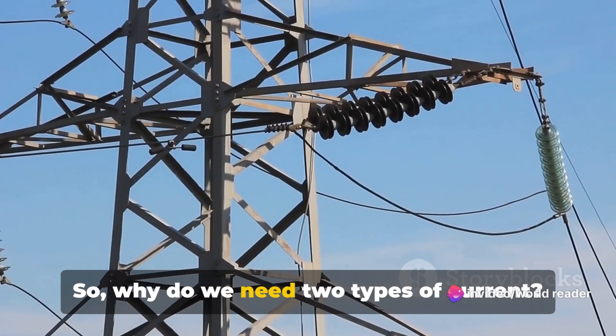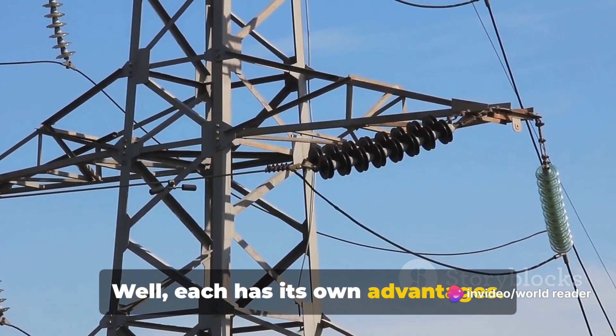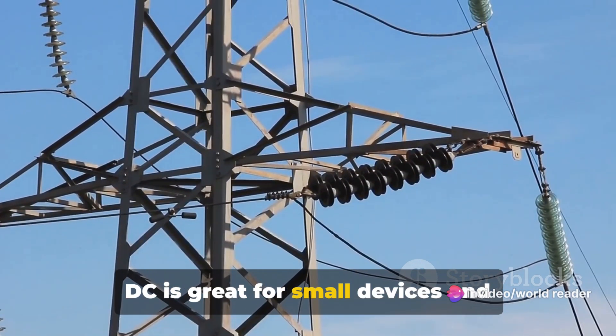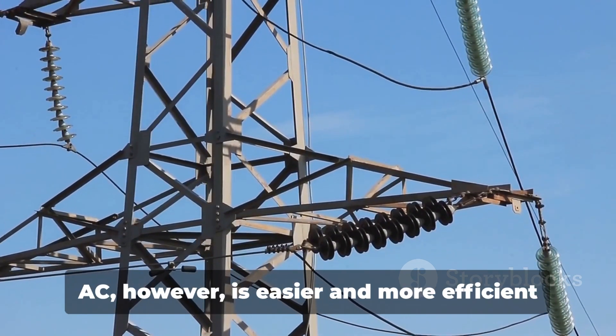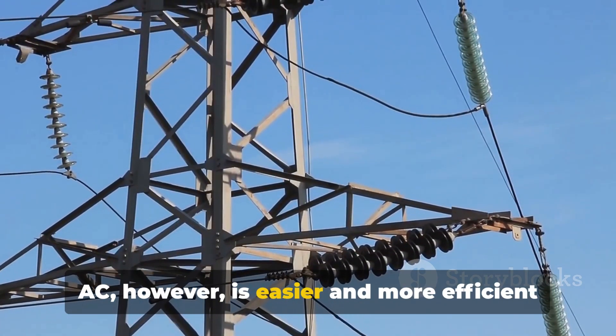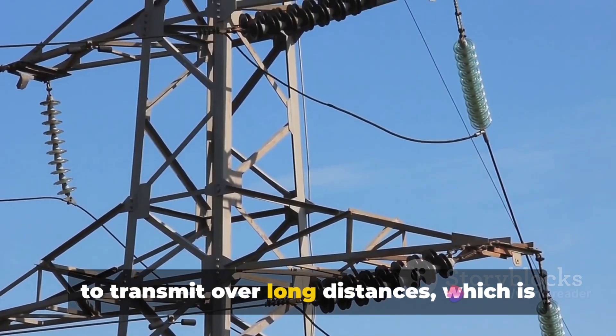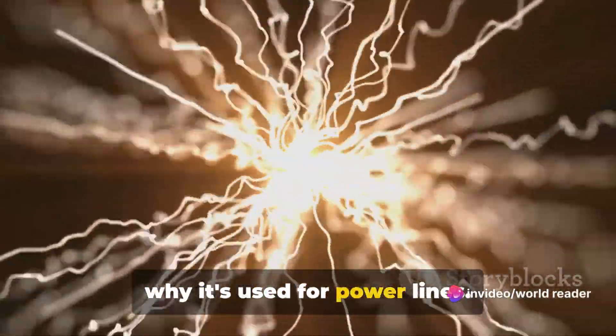So why do we need two types of current? Well, each has its own advantages. DC is great for small devices and electronics that need a steady and constant supply of current. AC, however, is easier and more efficient to transmit over long distances, which is why it's used for power lines.